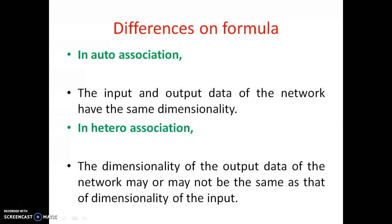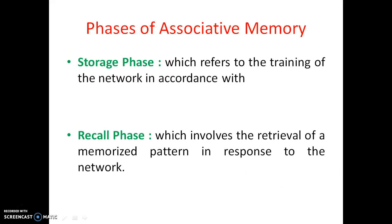Based on this formula, there is a difference between auto association and hetero association. In auto association, yk is equal to xk, meaning the dimensionality is the same for both input and output. In hetero association, the dimensionality is not necessarily the same — it may or may not be the same.